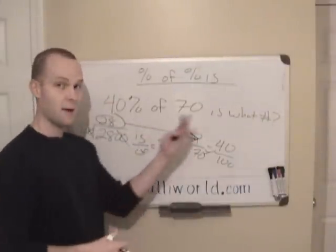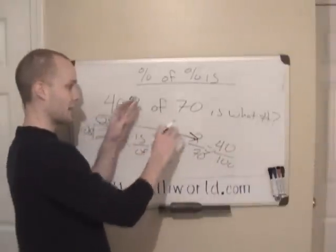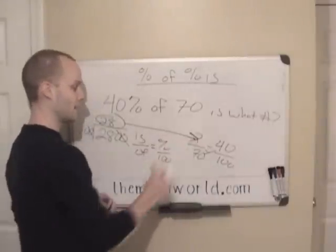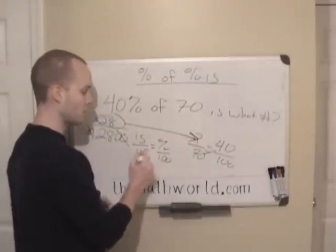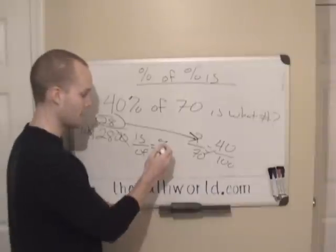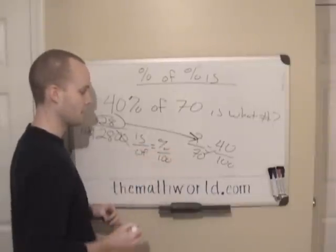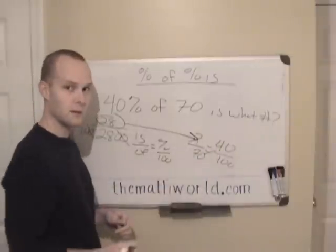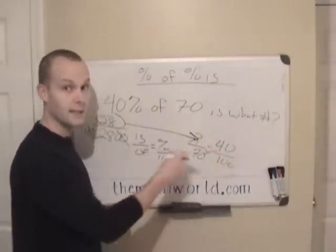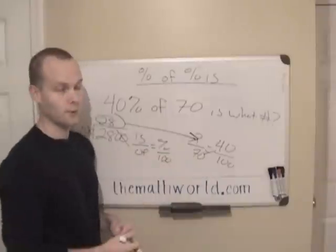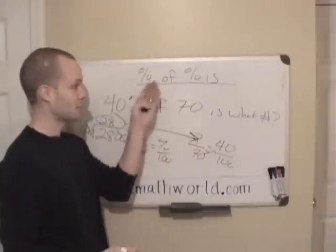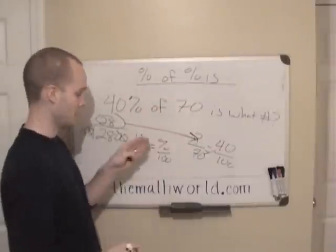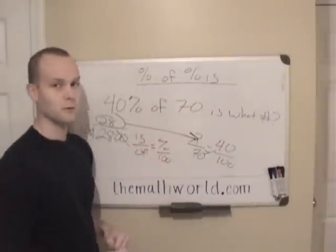So it doesn't matter how they word the question. It doesn't matter if they switch it up. You always know it will tell you which two of these three that you have: the percent, is over of. And all you have to do is fill in those numbers, then multiply and divide. And that will give you the variable that you don't have. So this is an easy way of doing percent of, percent is. Is over of equals percent over 100.